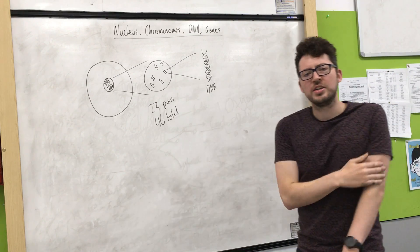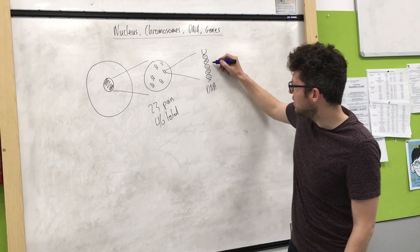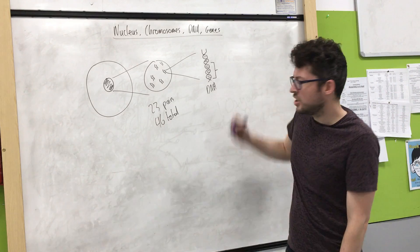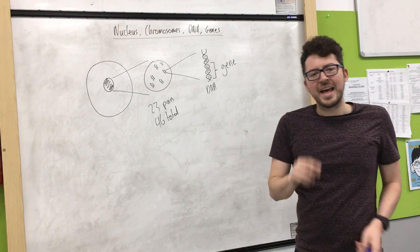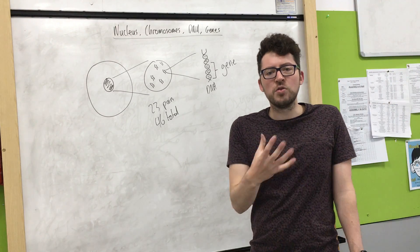Now, if we zoom in on a short section of DNA, so let's imagine this short section here, it will give us a gene. And genes are what code for our features.